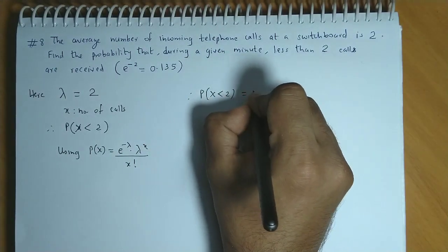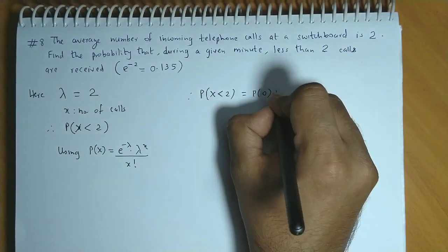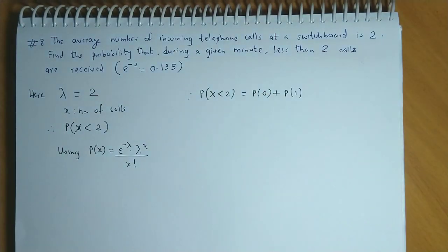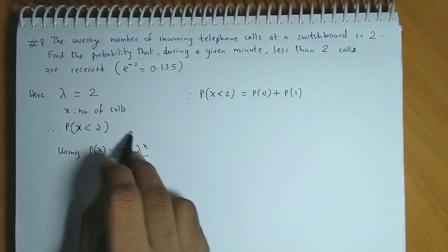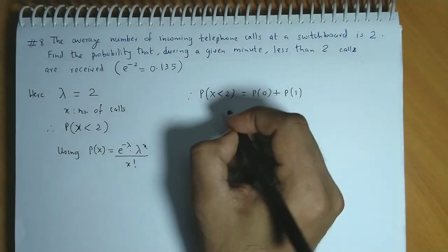Now less than 2 means it can be 0 calls or it could be 1 call. So basically we have to find P of 0 and P of 1. So we will use this formula here.